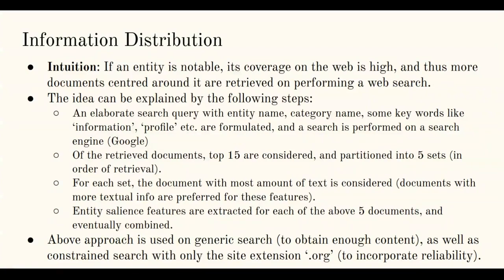To this end we define information distribution features. The intuition is that if an entity is notable, its web coverage is high and more documents centered around it will be retrieved in a web search. We formulate an elaborate search query including the entity name, category name, and keywords like 'information' and 'profile', and perform a search on Google. Of the retrieved documents, the top 15 are considered and partitioned into five sets — the first three documents in the first set, the last three in the fifth set — chosen based on empirical experiments. For each set, we pick the document with the most text to prioritize coverage. Entity salience features are extracted from each of these five text-rich documents. We also apply controls on the search engine to ensure only reliable results are retrieved.